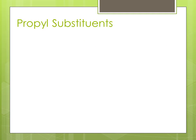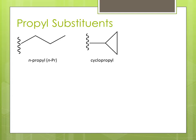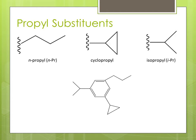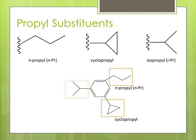There are three propyl substituents: n-propyl, cyclopropyl, and isopropyl. Here's an organic molecule using all three — n-propyl, cyclopropyl, and isopropyl.